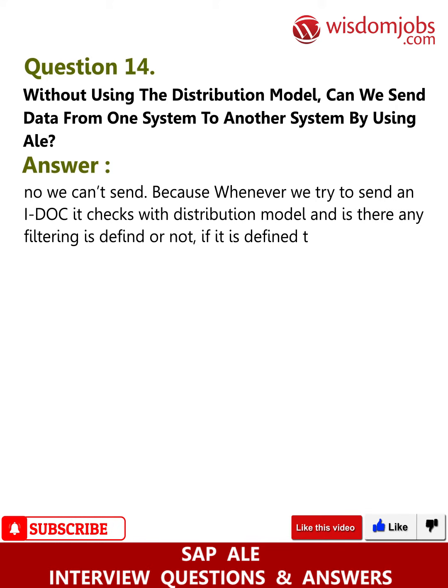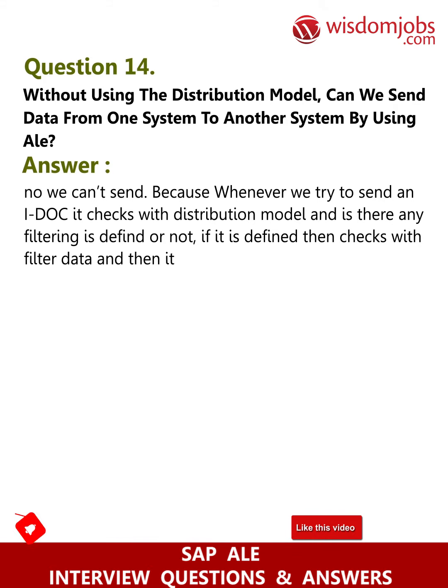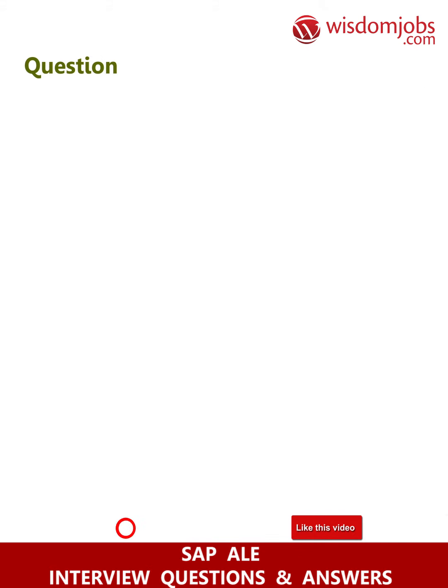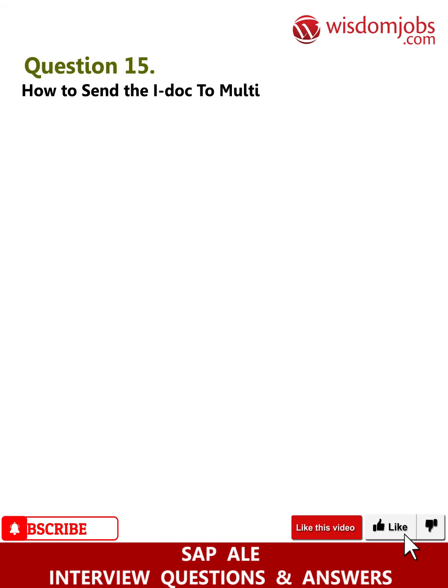If filtering is defined, then it checks with filter data, and then it checks with receiver and message type. Question 15: How to send the IDOC to multiple subsystems?